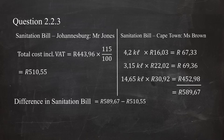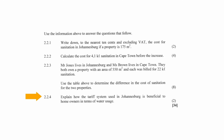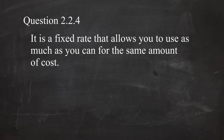The difference in the sanitation bills of Ms. Brown and Mr. Jones is R589.67 minus R510.55, which equals a difference of R79.12. In question 2.2.4, you have to explain how the tariff system used in Johannesburg is beneficial to homeowners in terms of water usage. In Johannesburg, your sanitation is calculated based on your property size and not the amount of water you use. It is a fixed rate that allows you to use as much water as you need for the same cost.